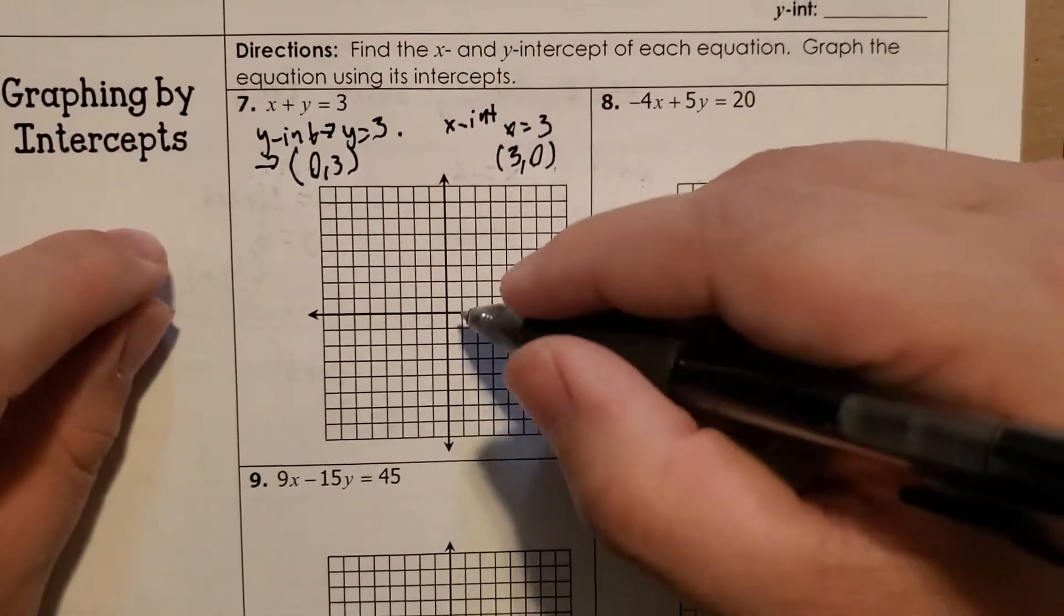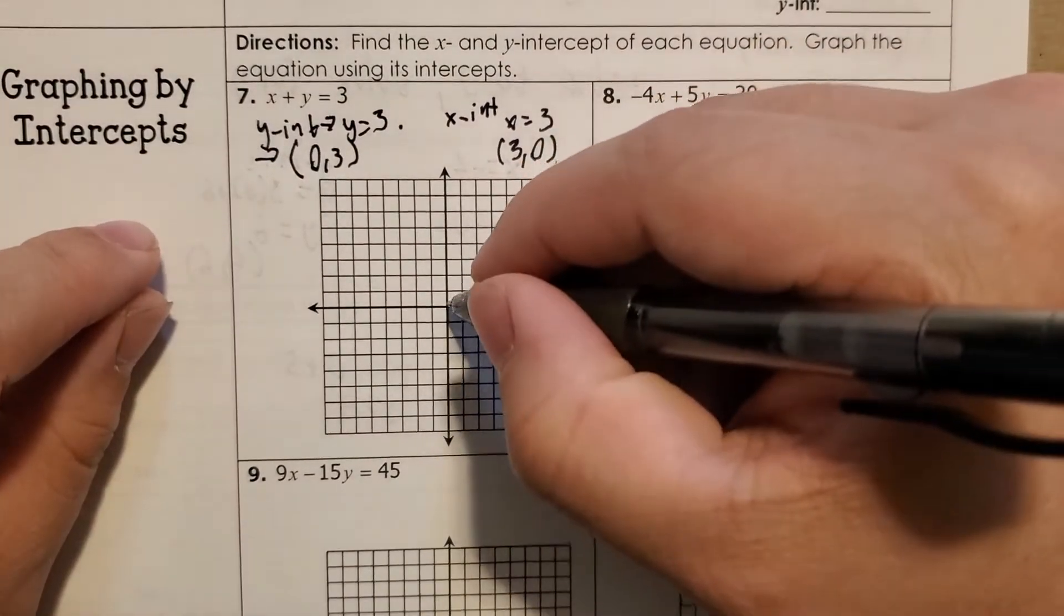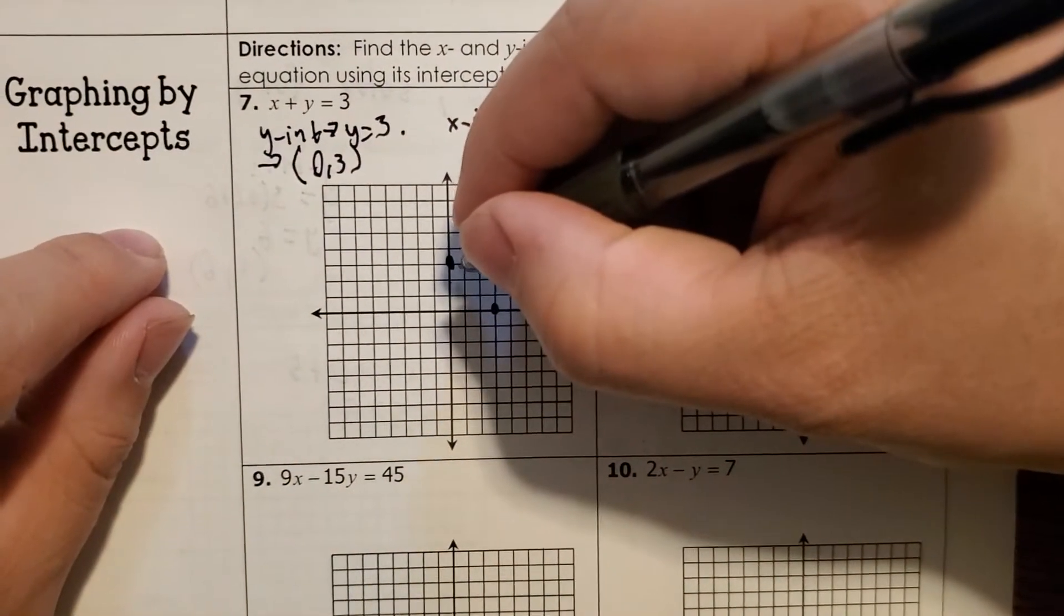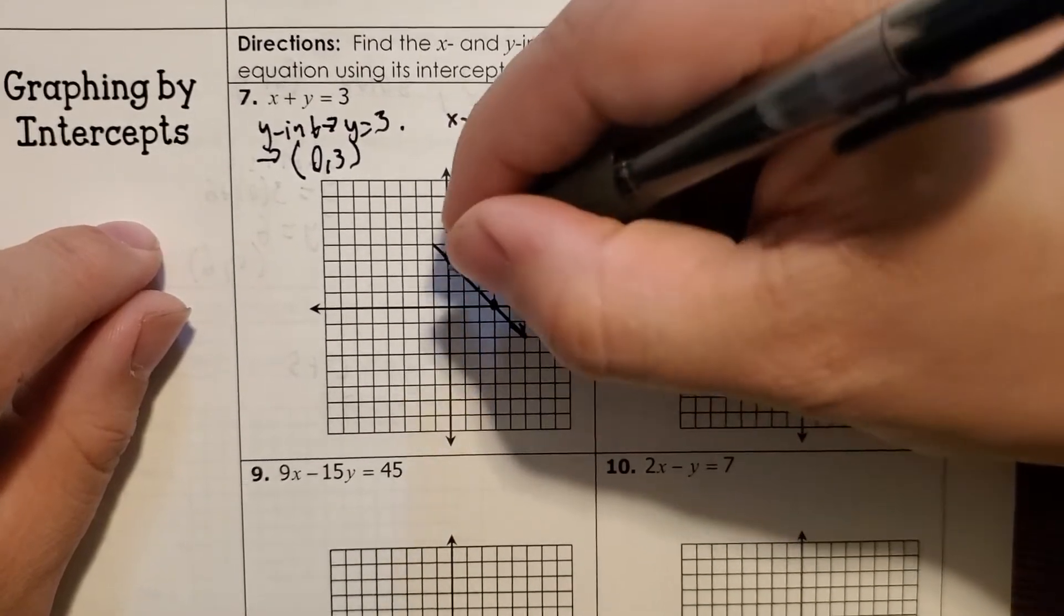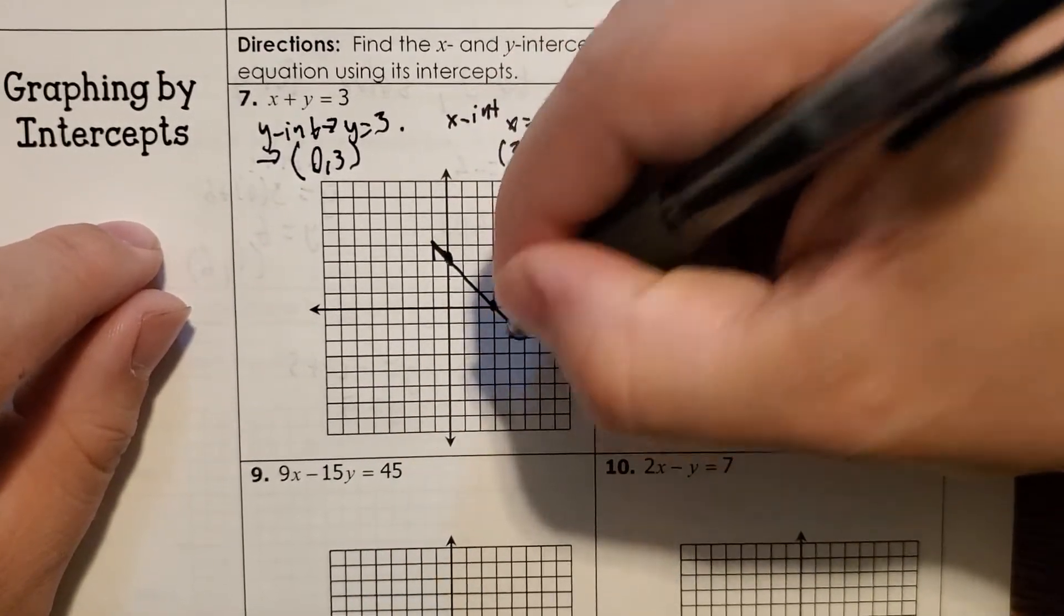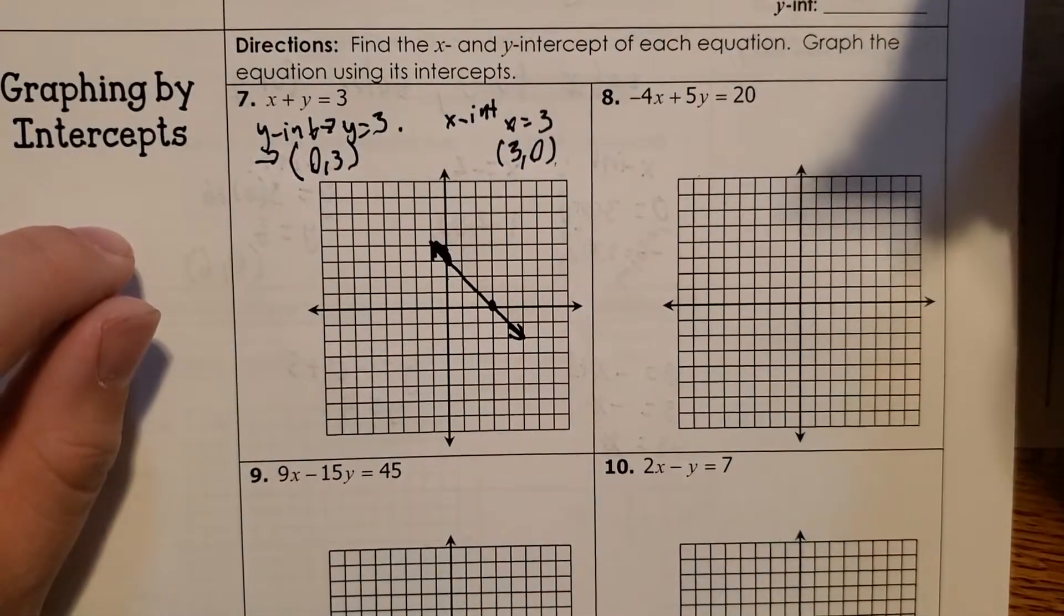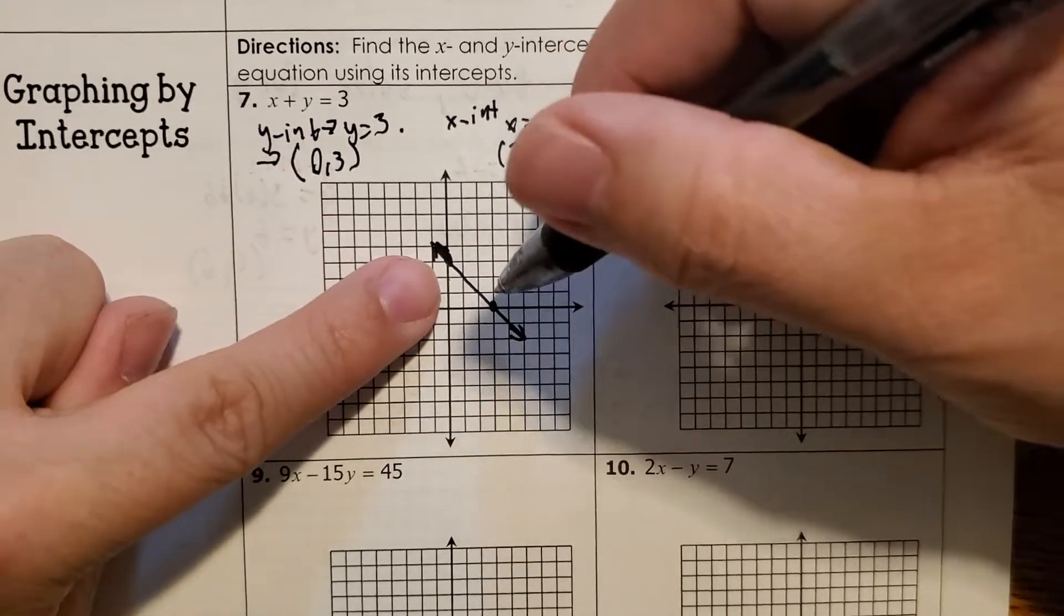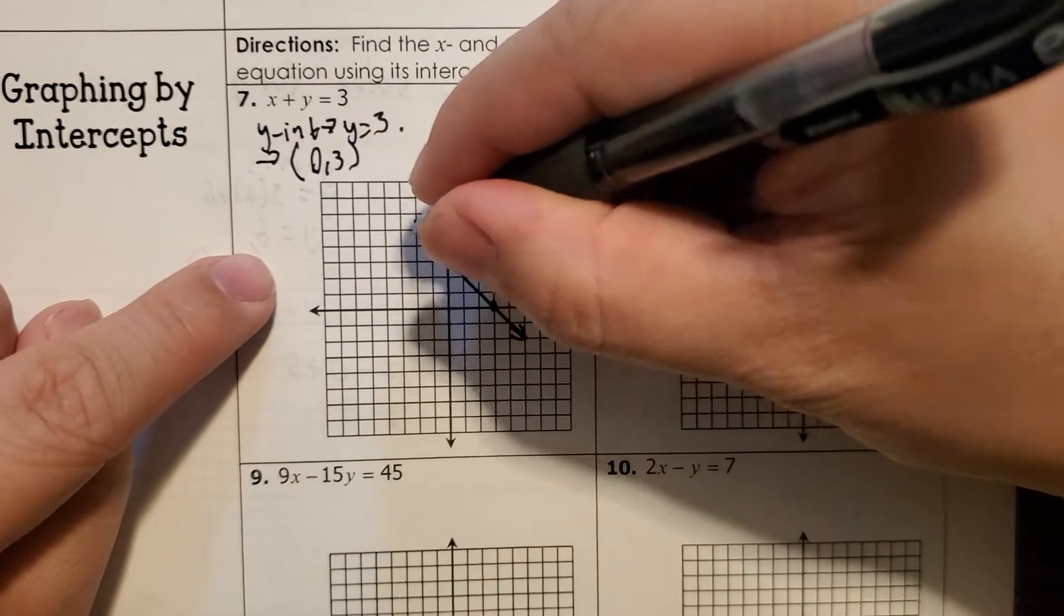So I can just plot those right on there. 1, 2, so here's 3, 0. Here is 1, 2, 0, 3. And then now that I've got these two things, I can draw a straight line through them. And you should probably use a ruler. I don't have one with me right now. But as long as we get the gist of it, that's important. And again, this is a function, so it is going to go on forever. So you do need to put the arrows on the end. I should probably draw that a little bit further out.